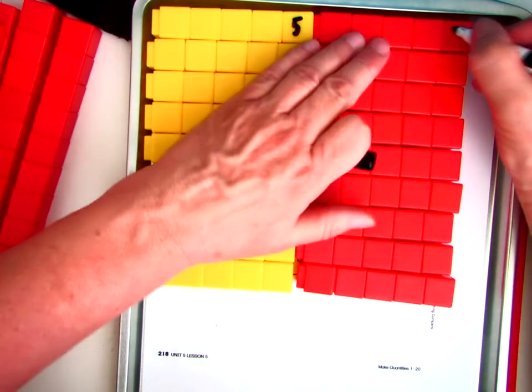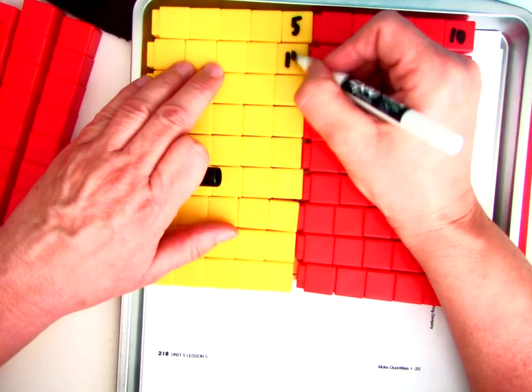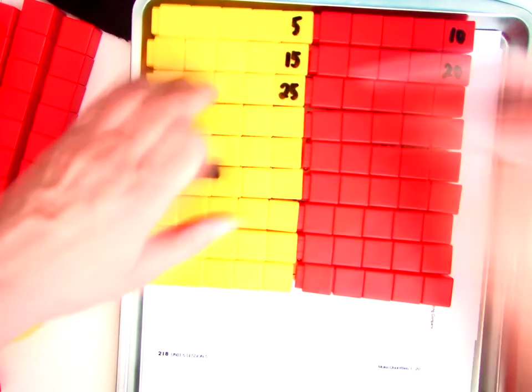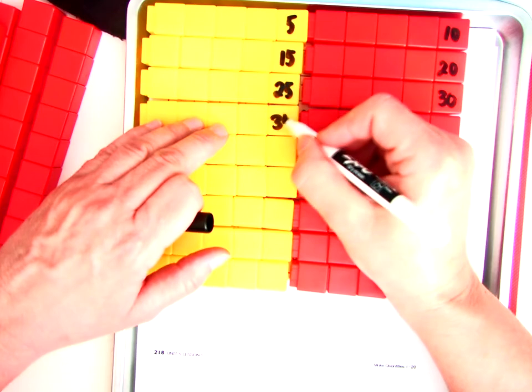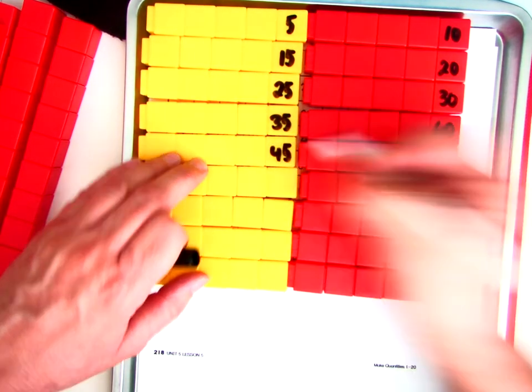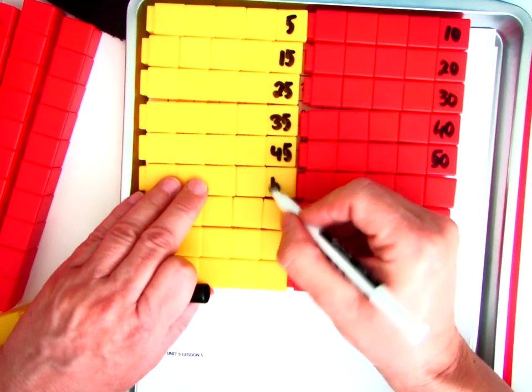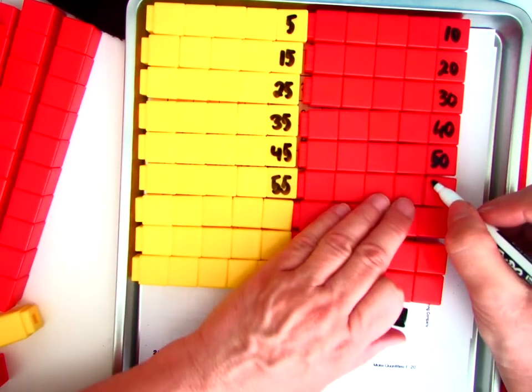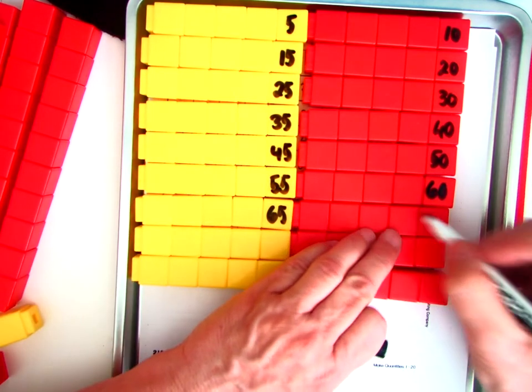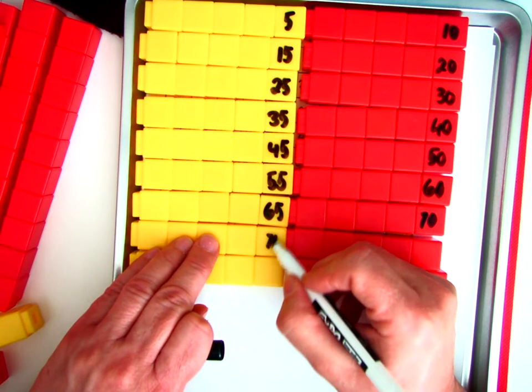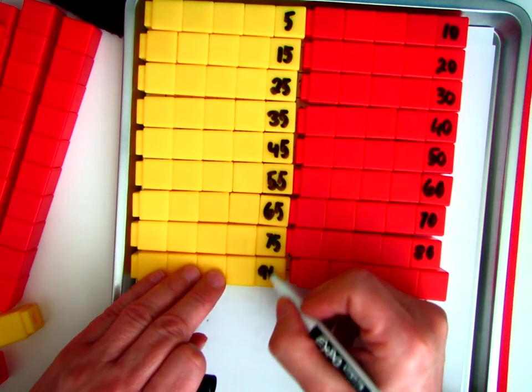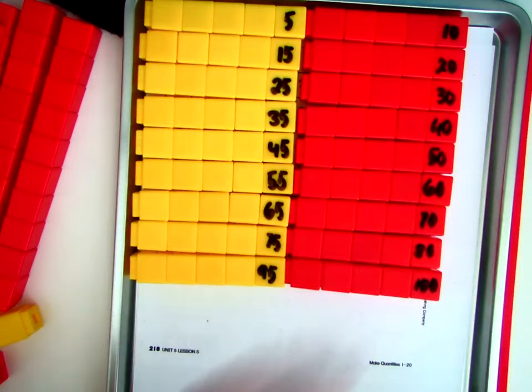And so just so that you can see, here is where the 5 ends. So we have 5, 10, 15, 20, 25, 30, 35, 40, 45, 50, 55, 60, 65, 70, 75, 80, 95, 100. Okay?